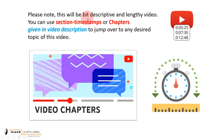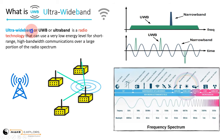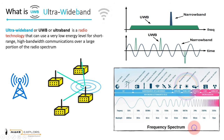Please note that this will be a bit descriptive and lengthy video. You can use section timestamps and chapters given in the video description to jump over to any desired topic. So, what does actually mean by UWB, the ultra-wideband? As the standard Wikipedia definition says, ultra-wideband or UWB is a radio technology that can use a very low energy level for short-range, high-bandwidth communications over a large portion of the radio spectrum.